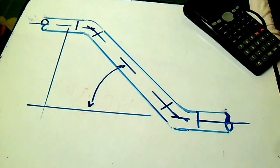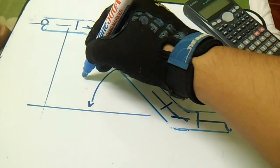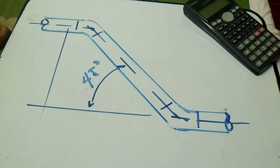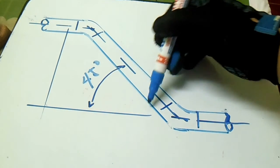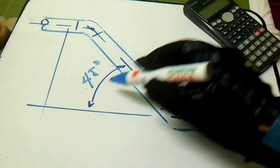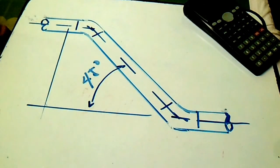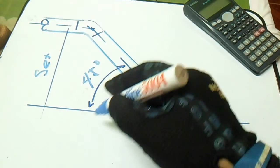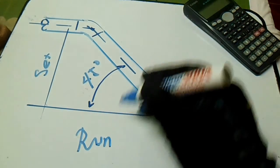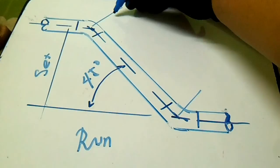Hi guys, welcome to Piping, Welding and DT Channel. We have an angle of 45 degrees, starting from a point and from the center of the pipe. This is a 45-degree angle. We have a set, run, and travel. The set is here, the run is here, and from the center of the elbow to the center of the elbow, we have the travel.